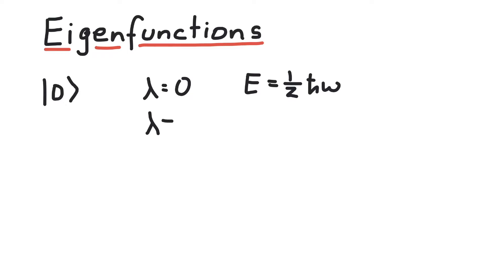Next, there should be a state with lambda equal to one and energy equal to three-halves h-bar omega. So let's call this state one. On the one hand, we know that two eigenfunctions of the harmonic oscillator are orthogonal to each other. This means the inner product of zero and one vanishes. This is because the Schrodinger equation is a special kind of Sturm-Liouville problem. This guarantees that eigenfunctions to different eigenvalues are orthogonal to each other.